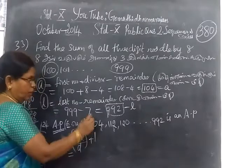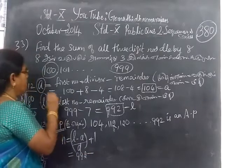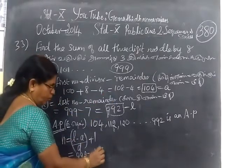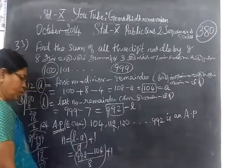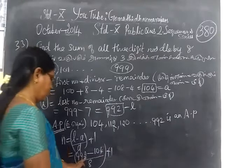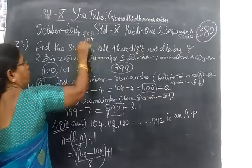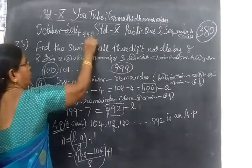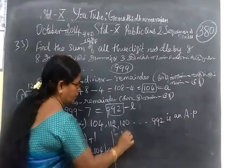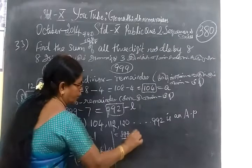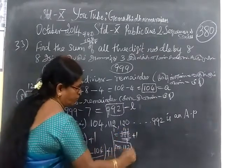L equal to last number 992, so 992 minus A, A is 104, divided by D which is 8, then plus 1. This is equal to 888 by 8 plus 1, so 112. N value is 112.